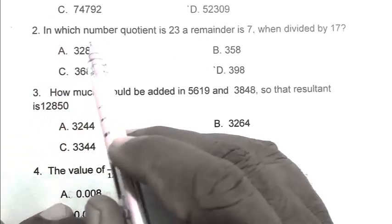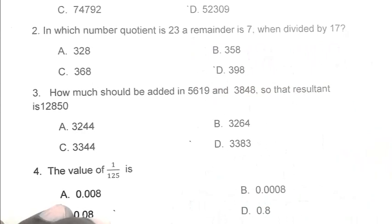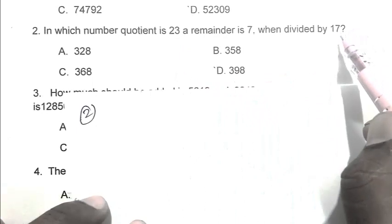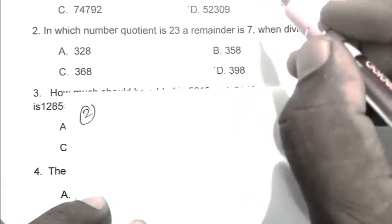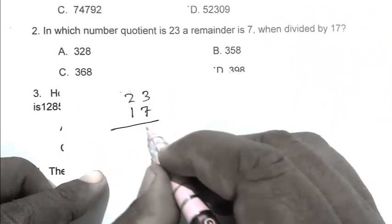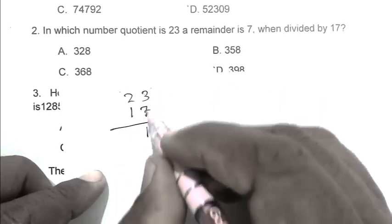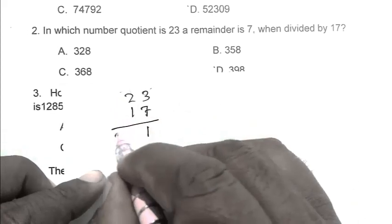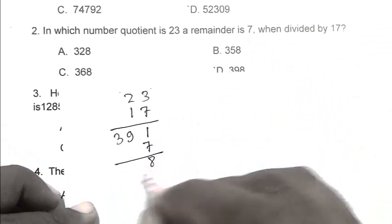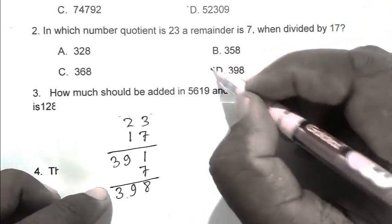Question number 2. In which number is the quotient 23, the remainder is 7, when divided by 17? So friend, first we multiply 23 with 17. After that, we add 7 with the resulting number. So 23 multiplied by 17: we get 391, then adding 7 gives us 398. So friend, B is the right answer.